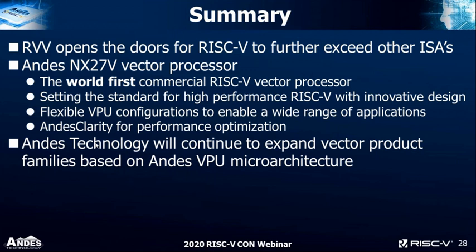Fourth question: does Andes plan to support vector extension on cores with higher performance? Yes. We will continue to innovate the processors, both in the vector processor and also scalar processors. Right now the NX27B is the first processor. We expect the NX45, which is a superscalar processor, to be enabled with the vector processing unit as well.